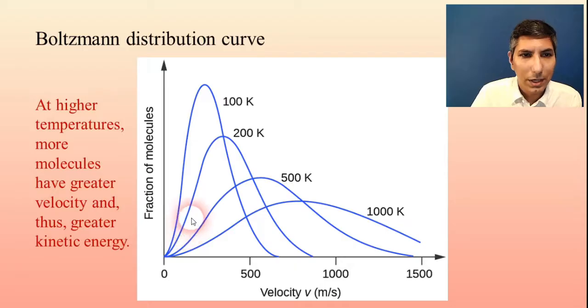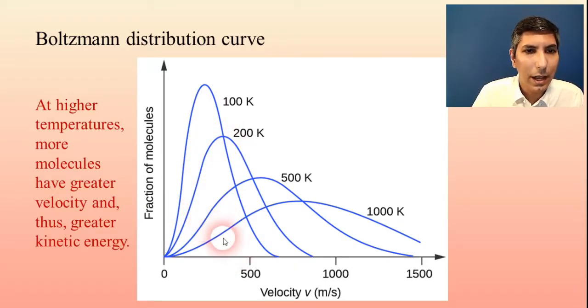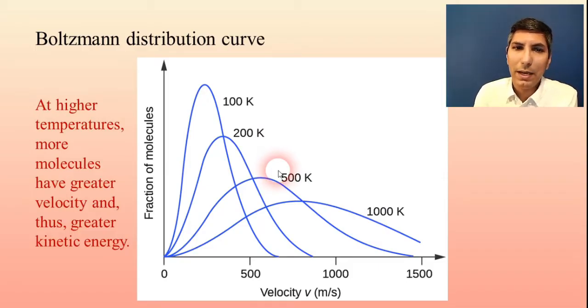Once you increase the temperature up to 200 Kelvins, notice what happens. We have a greater fraction of the molecules that are moving faster. At 500 it gets even higher, at 1,000 it gets higher. So notice that at any temperature, we have a range of molecular motions. Some are always going slower, some are going faster. But the average kinetic energy, the average speed, is higher when you raise the temperature.